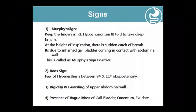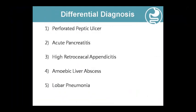For Boas Sign, there is hyperesthesia felt posteriorly over the 9th to 11th ribs. You can also observe rigidity and guarding of the abdominal wall. On palpation of the gallbladder area, you may feel a vague mass due to the inflamed, distended gallbladder.